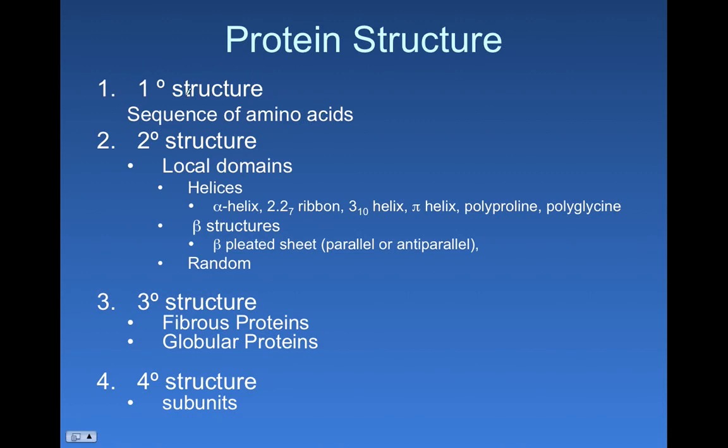The primary structure of a protein is just the sequence of amino acids, listing them sequentially. First, there's a methionine, then an alanine, leucine. Just a list of those is a description of the primary structure of the protein. It doesn't really tell you anything about the shape, but it tells you what flavors of amino acids are in there.